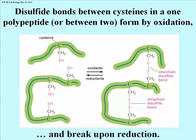They form by oxidation, and therefore can be disrupted by reduction using reductants. We will talk about using reductants to complete the denaturation as a method to study proteins later on.